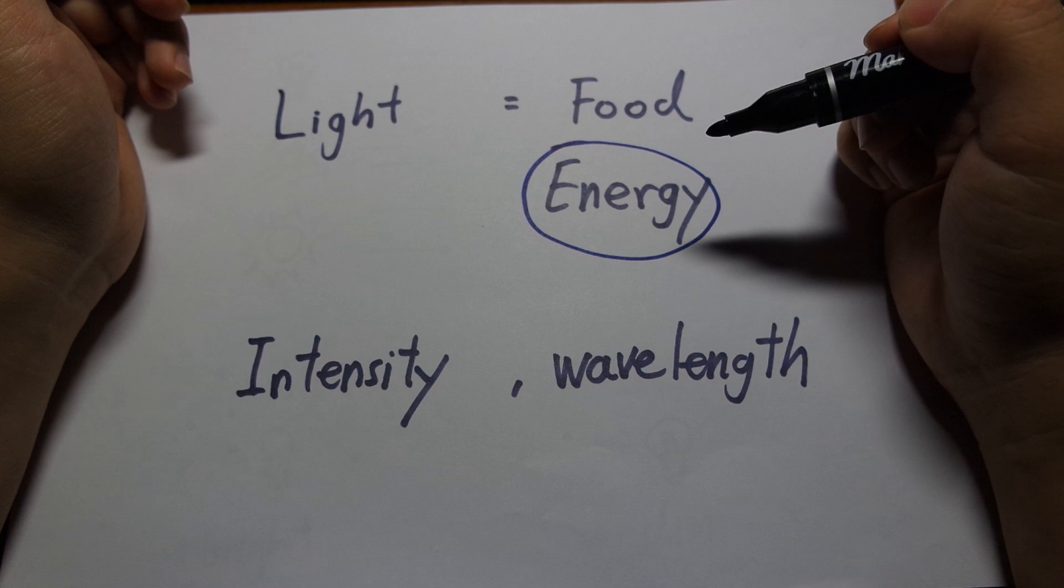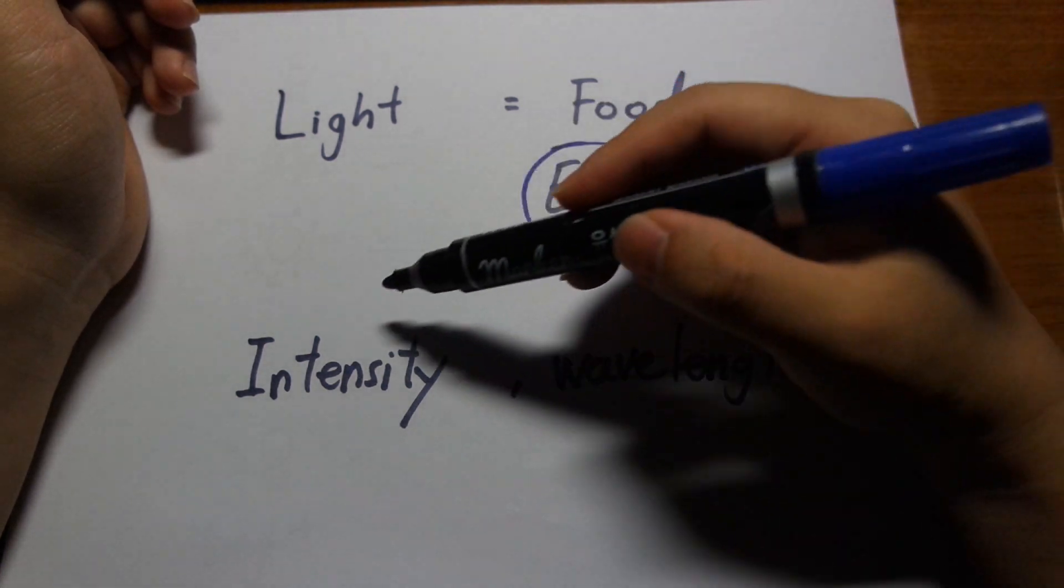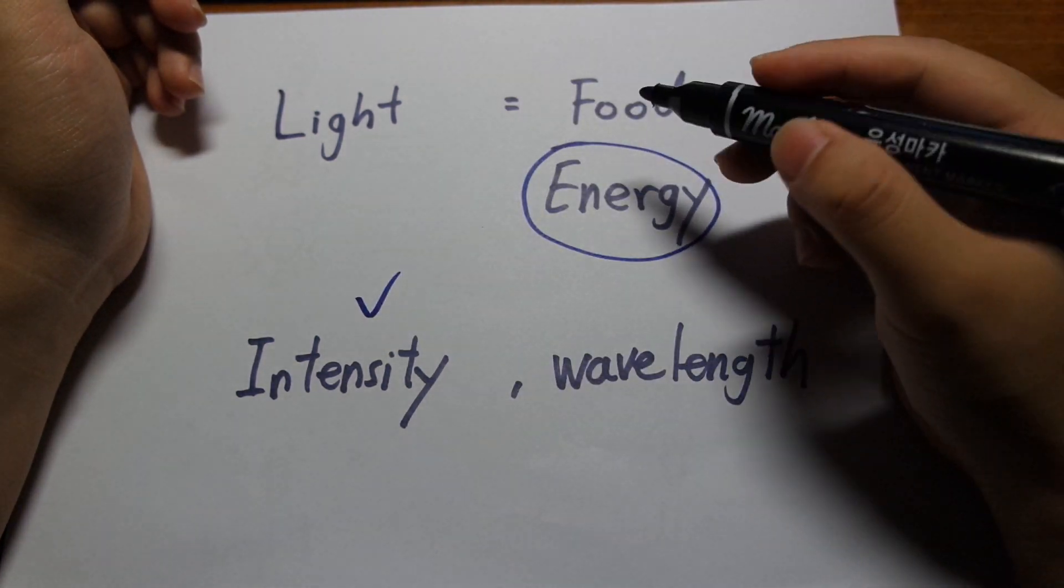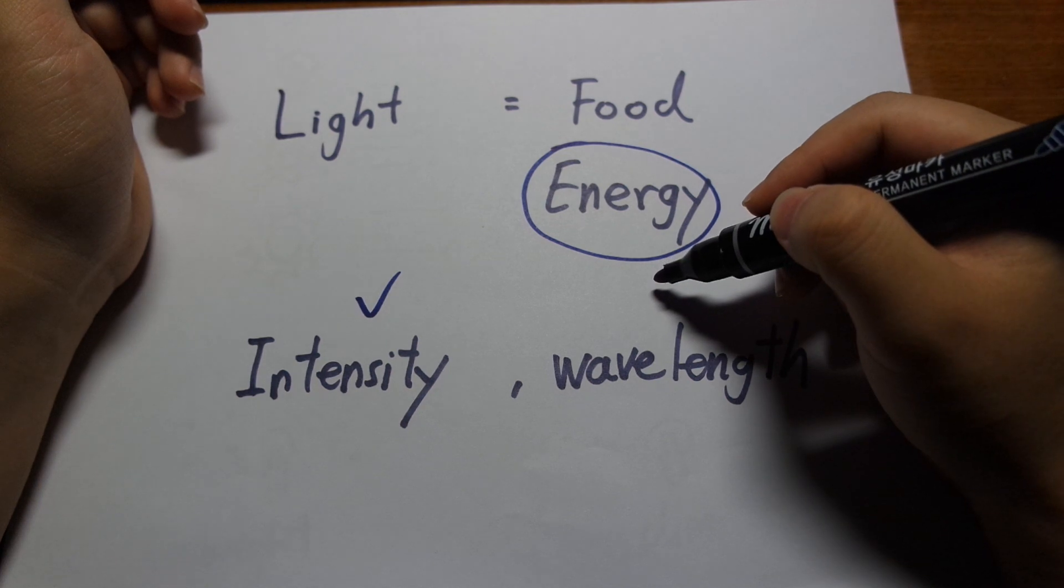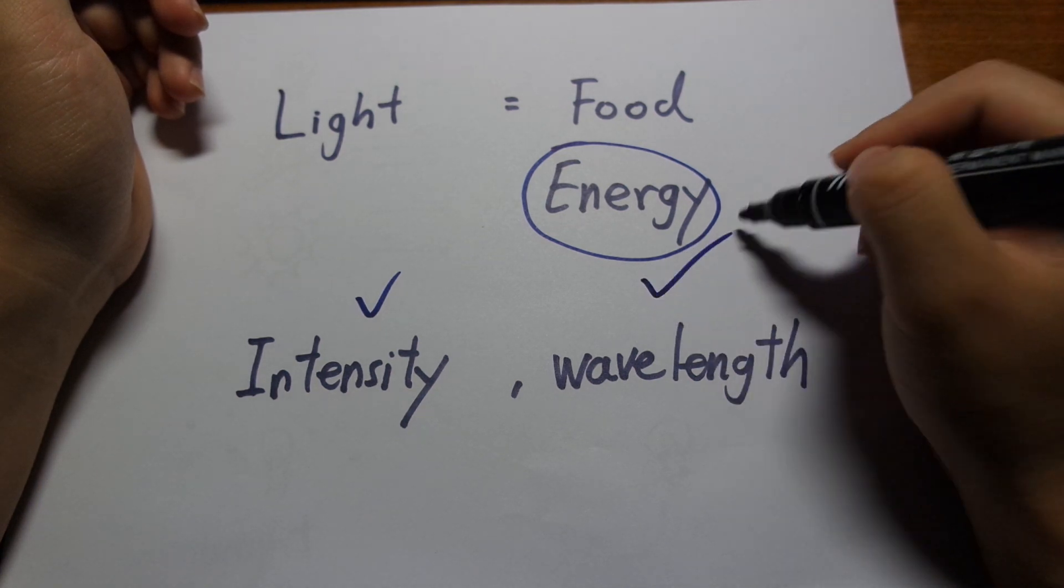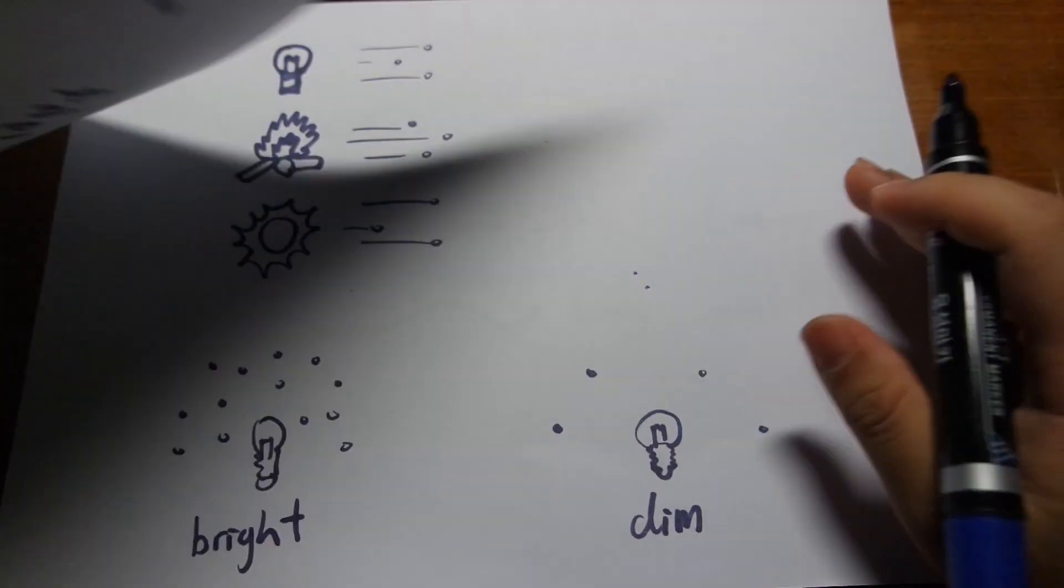And you can describe light in terms of two parameters. How bright is it? That is the intensity. And what properties does light have itself? And that is the wavelength. So I'll be discussing those two components.